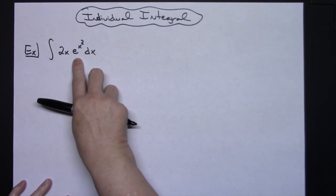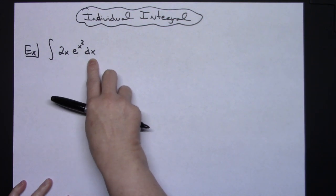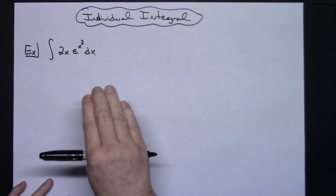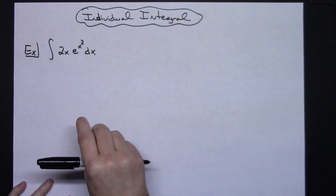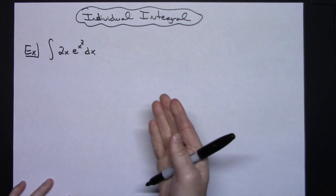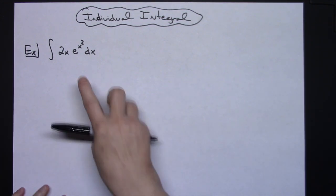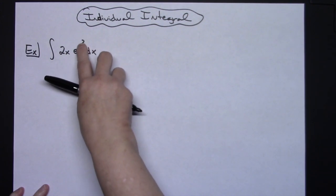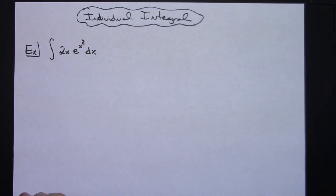We're going to take a look at the integral of 2x e raised to the x squared dx. Hopefully you are to the place where you're looking for something to let u equal so that when you take the derivative something's going to cross out. So that means that this x squared is where I'm going to let my u equal.